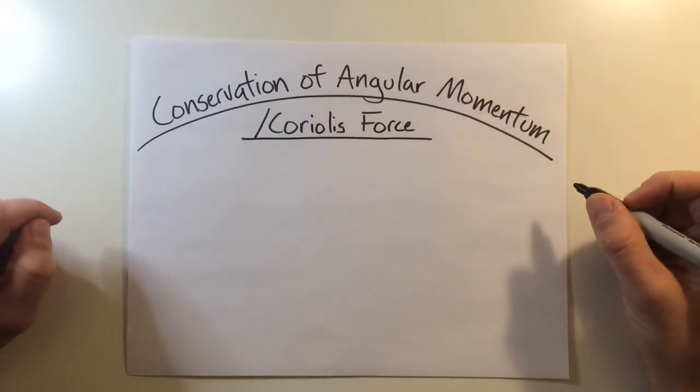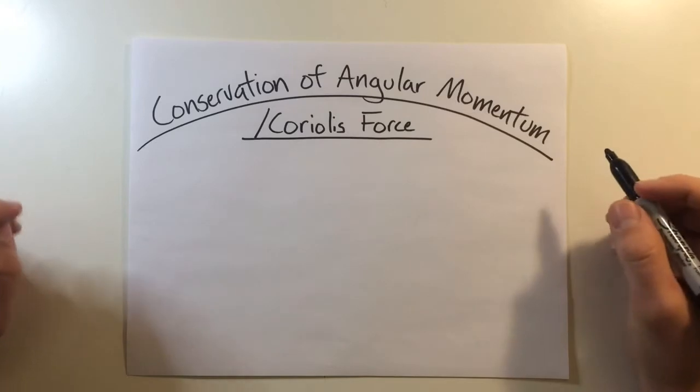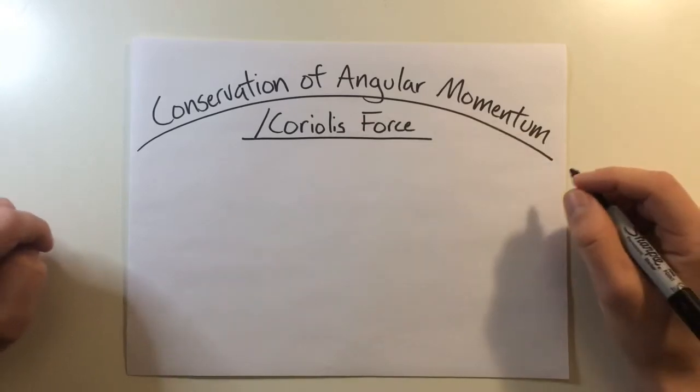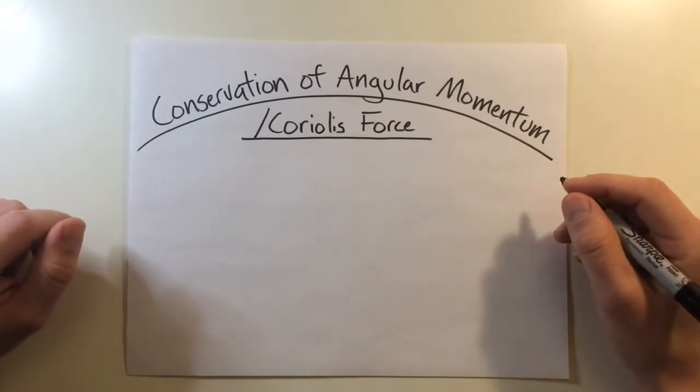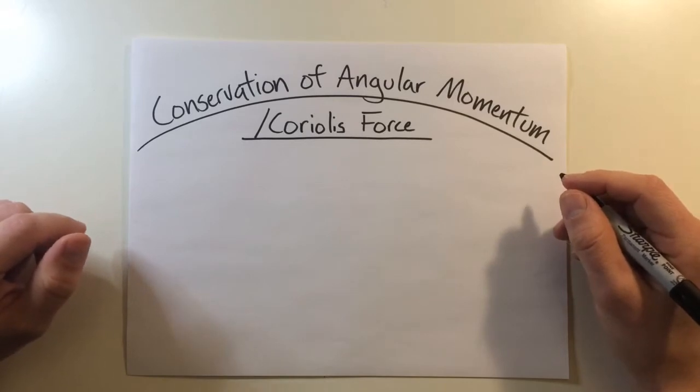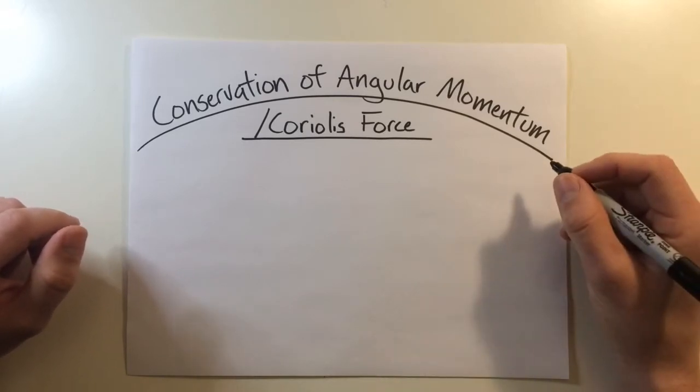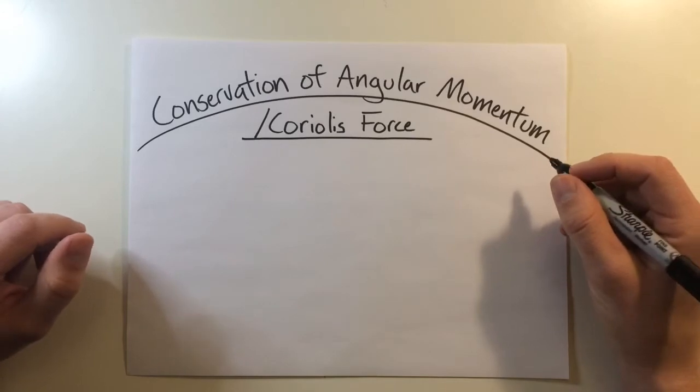Now conservation of angular momentum is sometimes used synonymously with Coriolis force or the Coriolis effect, which deals with the tendency of a rotating body to increase in velocity as the center of gravity gets closer to the axis of rotation.